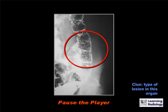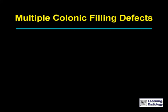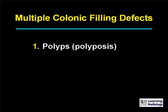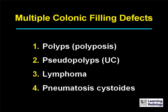The differential is for multiple colonic filling defects. There are four causes: multiple polyps such as in a polyposis syndrome, pseudopolyps in ulcerative colitis, lymphoma, or pneumatosis cystoides.